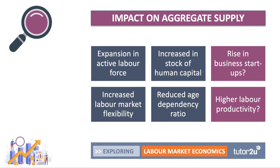Aggregate supply thinks about the supply side capacity and capability of a country — both short-term and long-term. Migration may well lead to an expansion in the active labour force, effectively increasing the country's productive potential and increasing the stock of labour, which would cause the production possibility curve to shift outwards. The labour force goes up, especially in countries experiencing an aging population and potential negative natural population growth. Migrants coming in with skills, qualifications and talents may increase the stock of human capital — not just the quantity but also the quality of labour. Migrant workers can also increase the flexibility of the labour market by helping to relieve shortages in key areas.